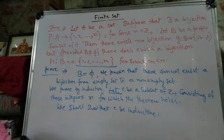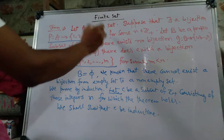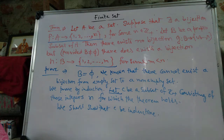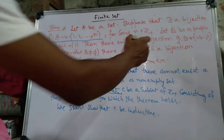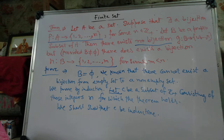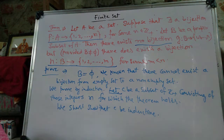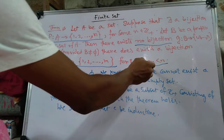Theorem statement: Let A be a set. Suppose that there exists a bijection f from A to {1, 2, ..., n} for some n belonging to Z plus. Let B be a proper subset of A. Then there exists no bijection G from B to {1, ..., n}, but provided B is not equal to phi, there does exist a bijection from B to {1, ..., m} for some m less than n.